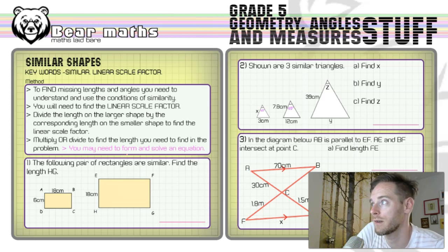Keywords are similar and linear scale factor. If something is similar, it is the same shape but a different size. Linear scale factor is the number we use to scale up something, make it bigger or smaller. If it's a positive integer, it's going to be sometimes bigger. If it's a fraction, then it's going to be sometimes smaller, whatever that number is, however many times smaller or bigger.